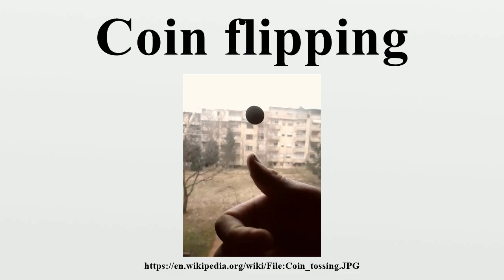The historical origin of coin-flipping is the interpretation of a chance outcome as the expression of divine will. Coin-flipping as a game was known to the Romans as navia aut caput, as some coins had a ship on one side and the head of the emperor on the other. In England, this game was referred to as cross and pile. The expression heads or tails results from heads and tails being considered opposite body parts.